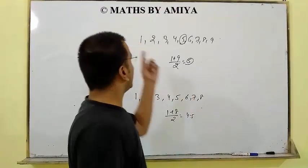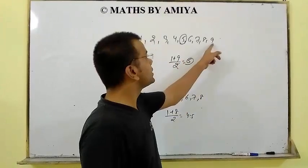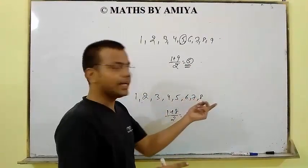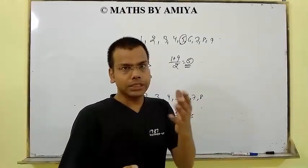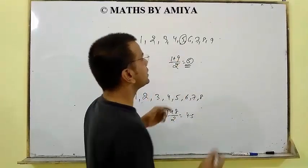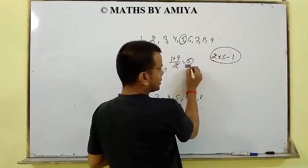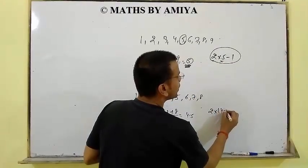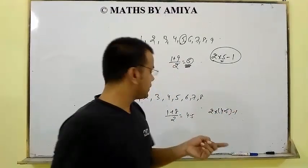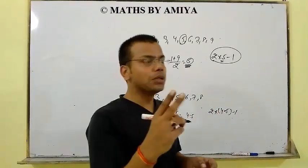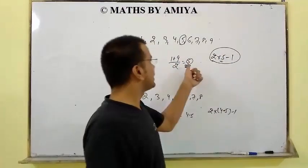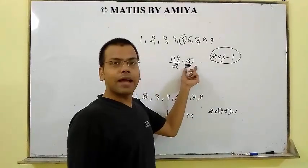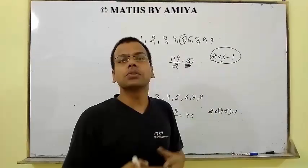So here we have 2 learnings. First: if we are working with the first n natural numbers and n is odd, then the average is an integer. If n is even, the average is integer + 0.5 (e.g., 4.5). Second learning: if the average is 5, total numbers = 2×5 − 1 = 9. If average is 4.5, total numbers = 2×4.5 − 1 = 8. So total numbers = 2 × average − 1.